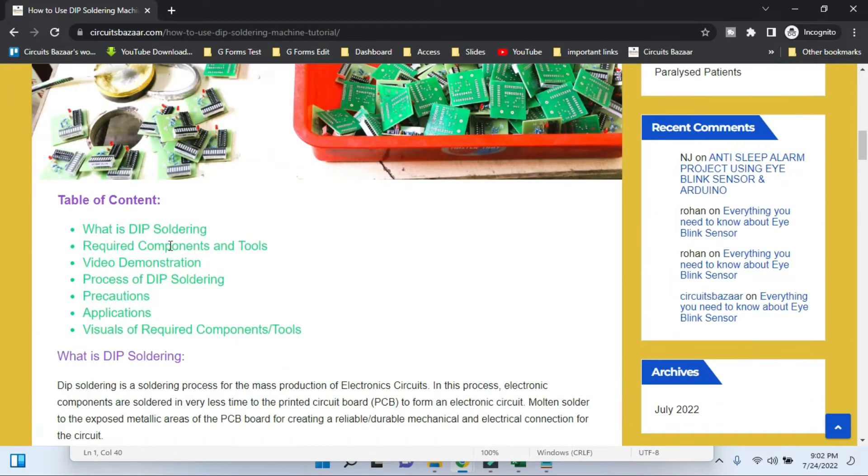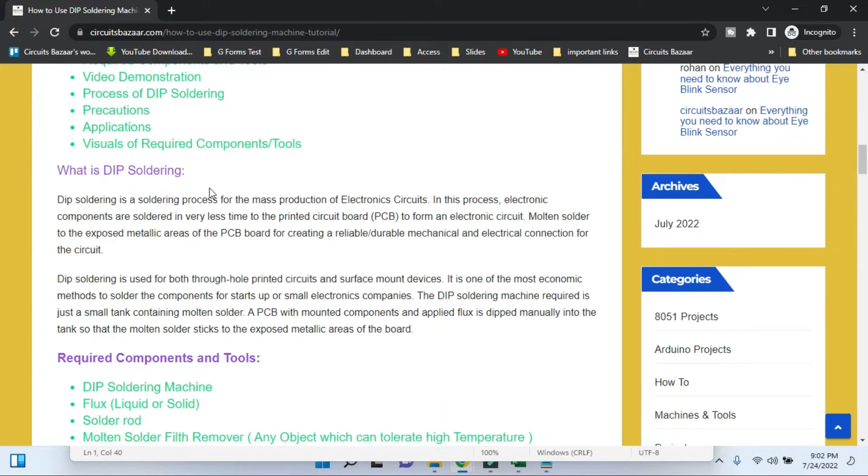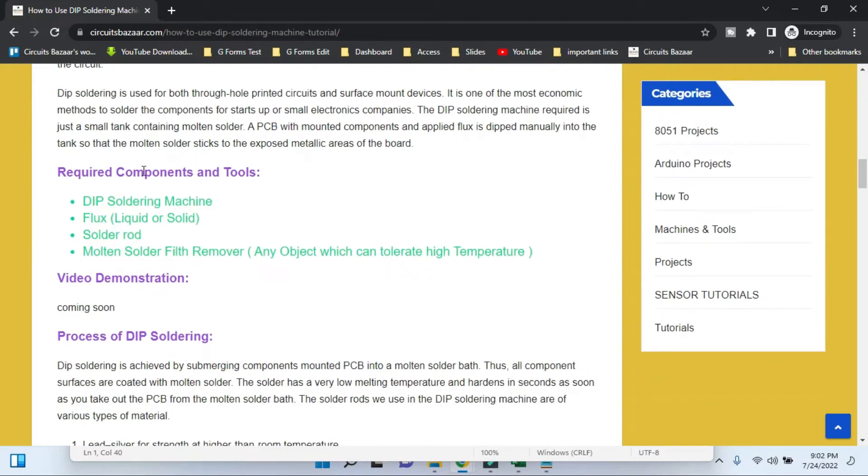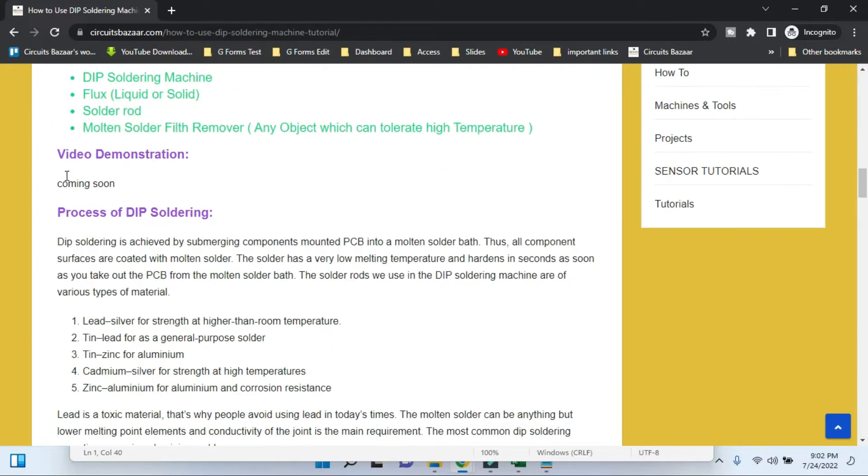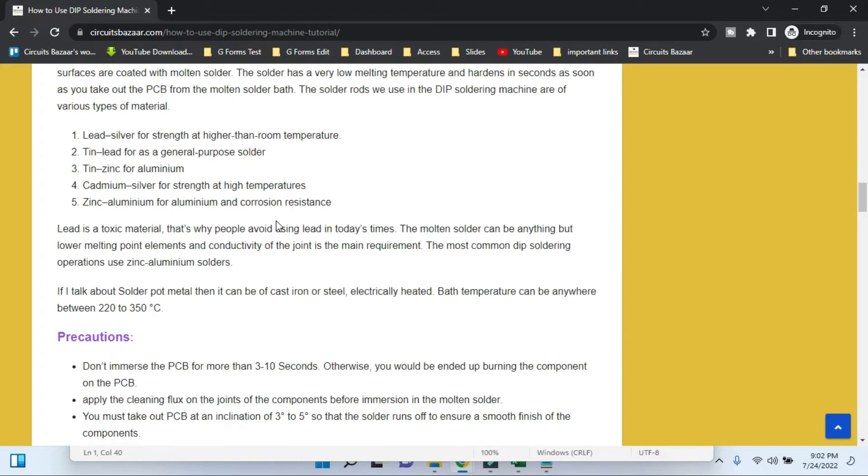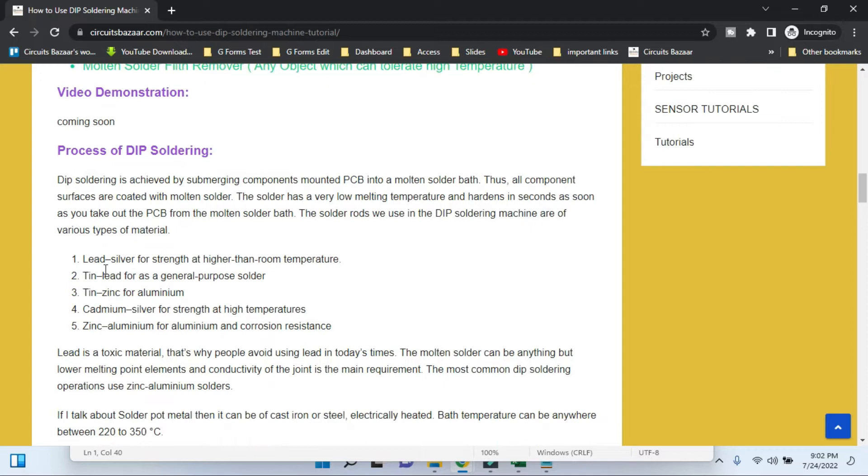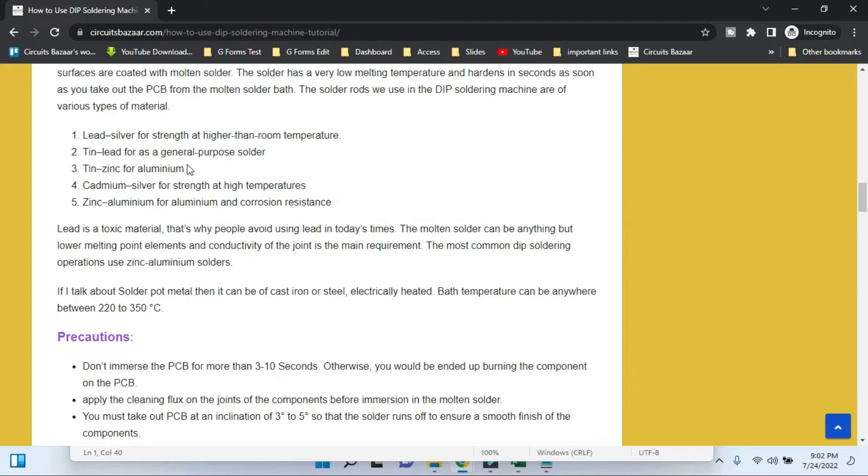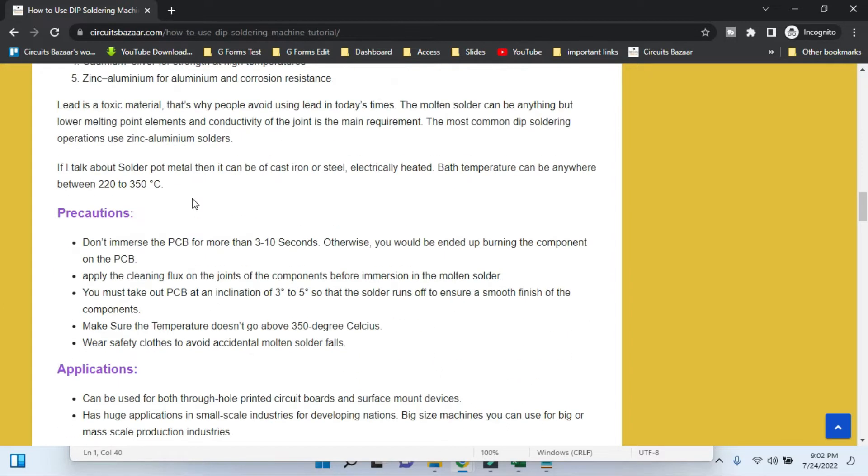The post includes a table of contents covering what a dip soldering machine is, required components, video demonstrations, and the dip soldering process. I've explained all types of solder rods like lead-silver-tin, lead-tin, and tin-zinc for aluminum. Everything is explained to give you a complete overview, including precautions.